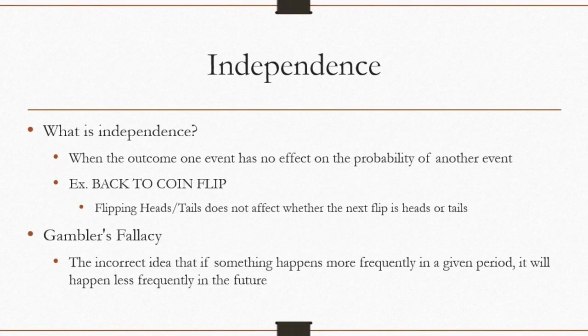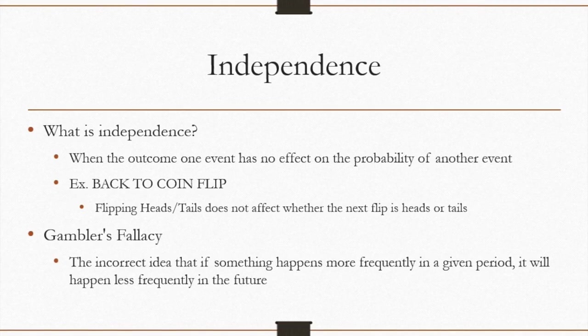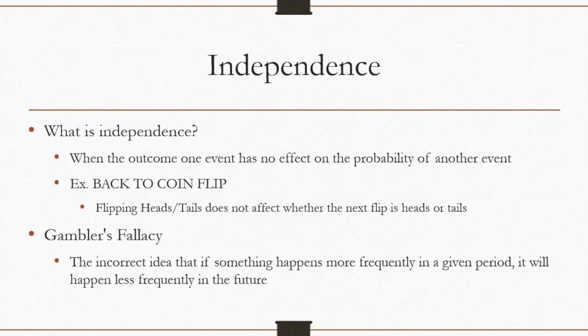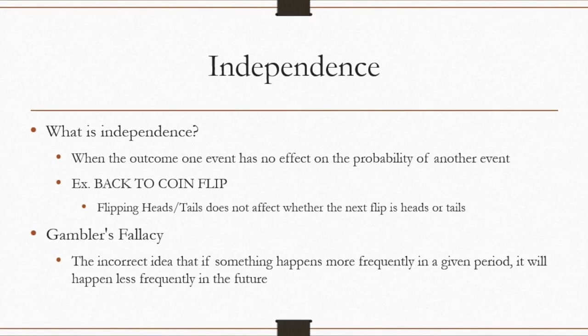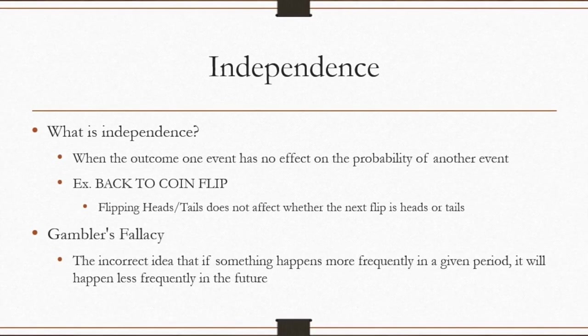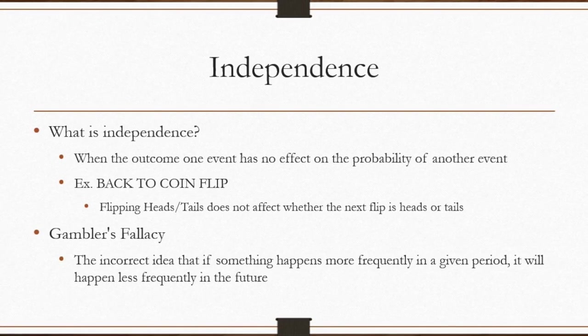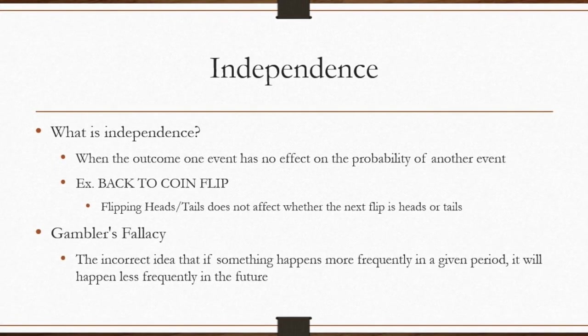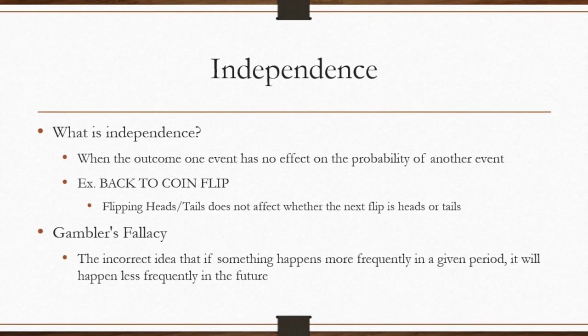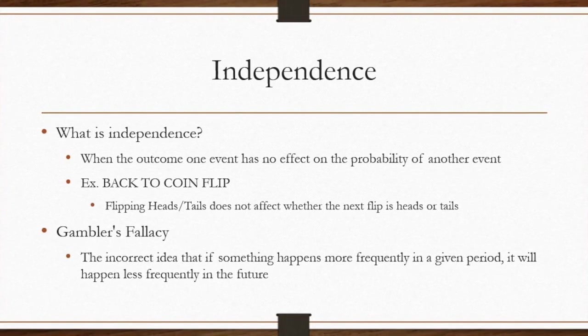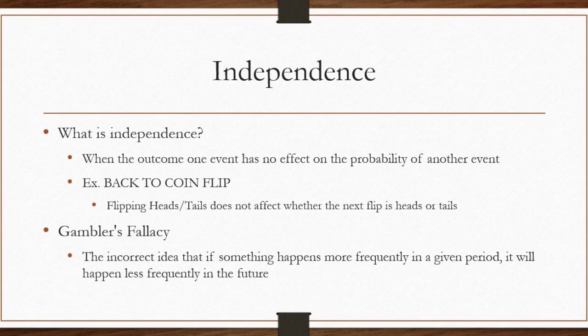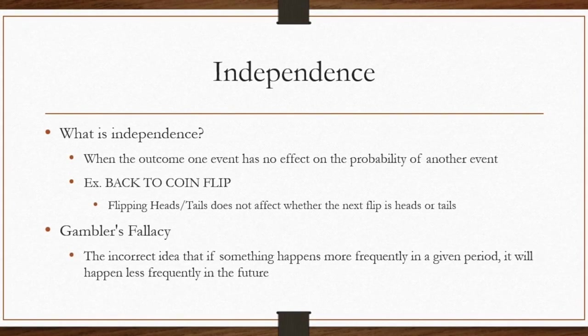Going more into the gambling aspect of probability, a common topic that comes up is independence of events. Independence refers to when one event has no effect on the probability of another event. To keep it consistent, we will refer back to our coin flip example. If we flip the coin and it turns up heads, flipping it once more is not affected by our first flip. In other words, the result from each trial does not affect the next.